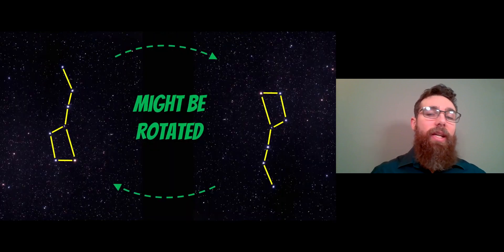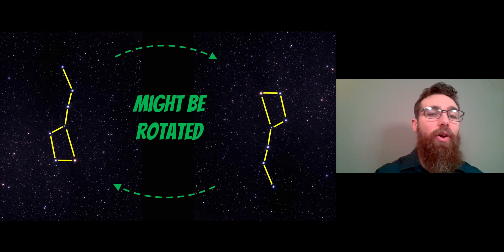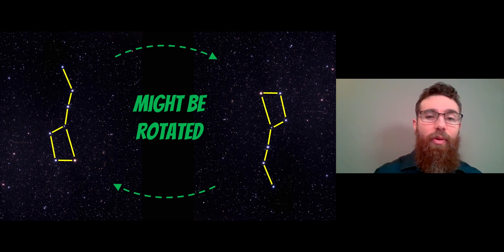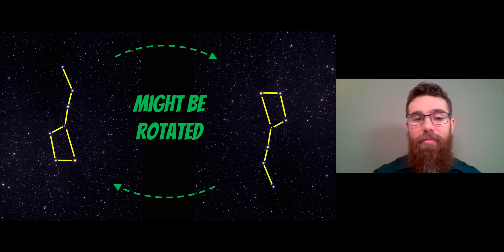It might be in a different orientation in the sky because the Earth rotates and the stars will rotate around the polar axis. You may find that this saucepan is either on its end, upside down, or some other orientation. Don't think you're going to find it looking perfectly level; you just need to find those seven stars that make that shape.